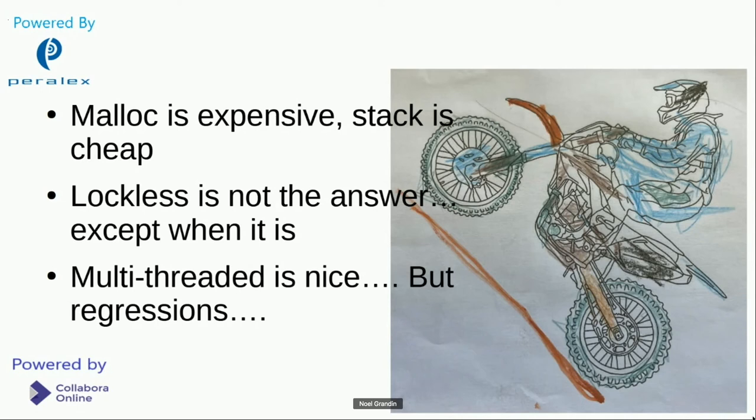So the answer is lockless is generally not the answer except when it is because you tried everything else. So this particular time it did make a difference and we used a quite nice little library called libcuckoo which is a concurrent hash map and improved things nicely.